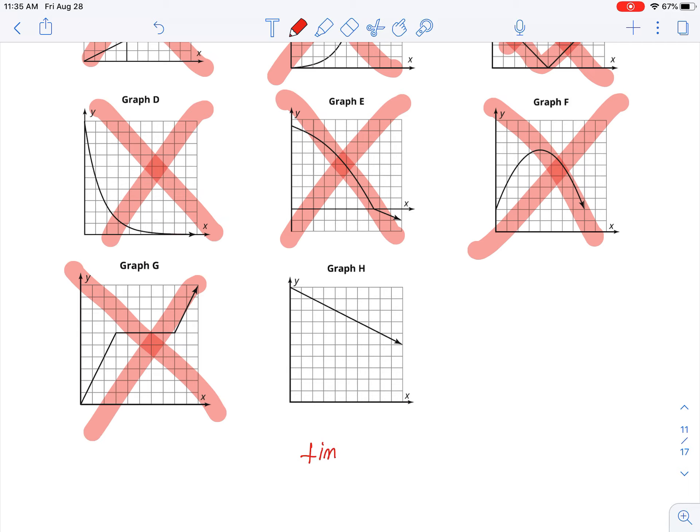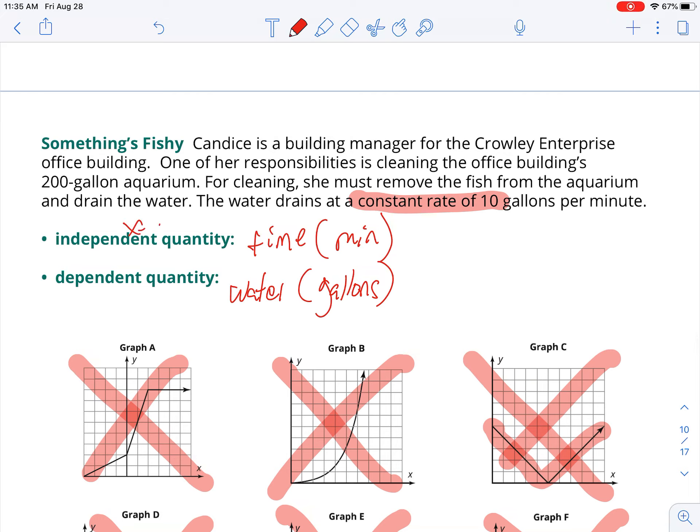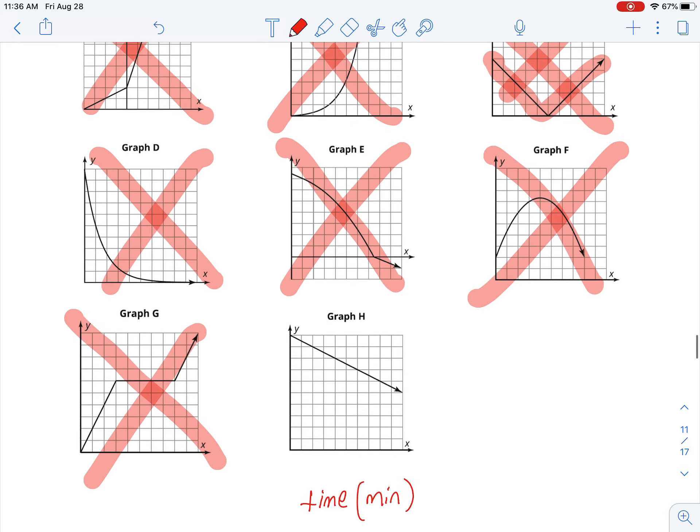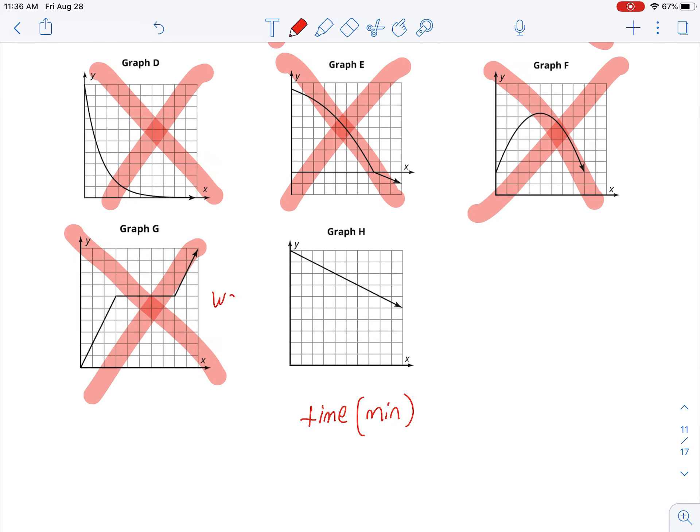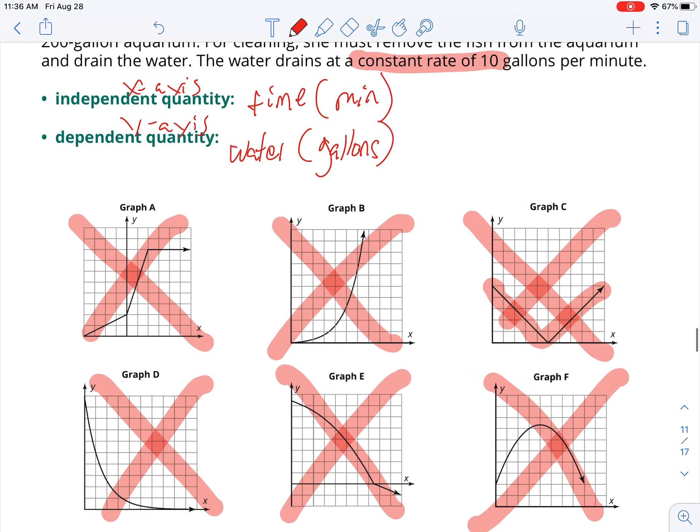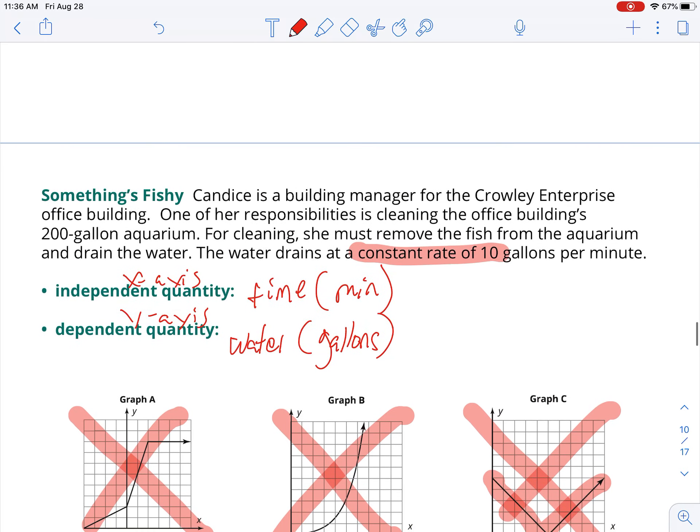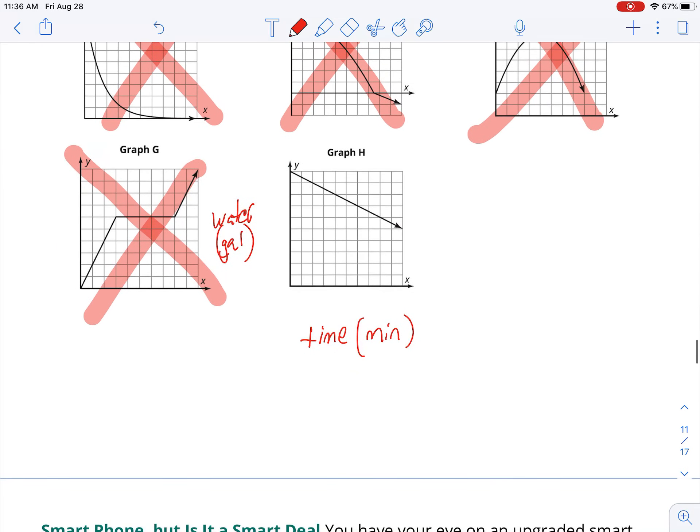We said time was our independent. That is always your x-axis, and we are in minutes. That's our x-axis. And then our y-axis is our dependent, which in this case is water, which is gallons. Now, per minute here says it drains at 10 gallons per minute. So that's fine. We're going to go ahead and go by ones.